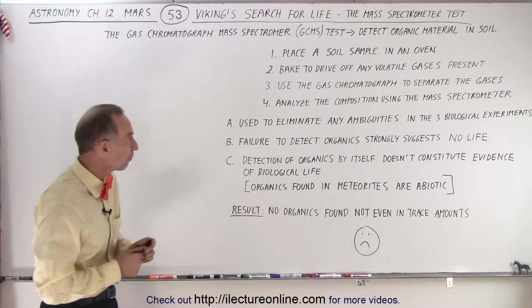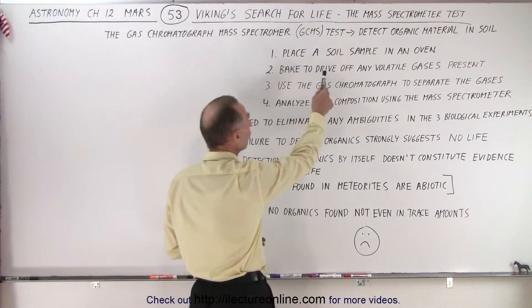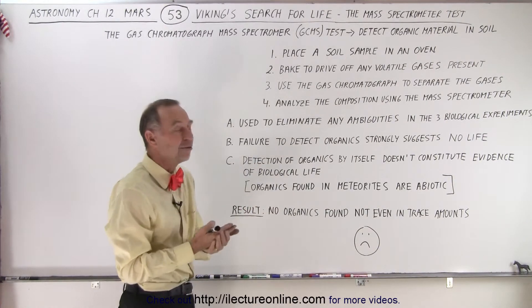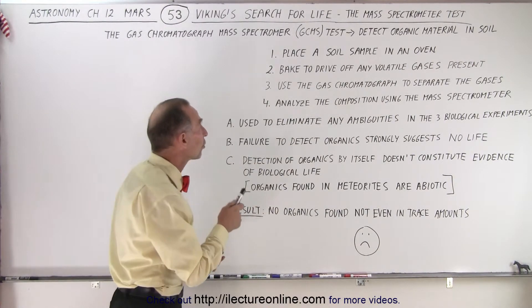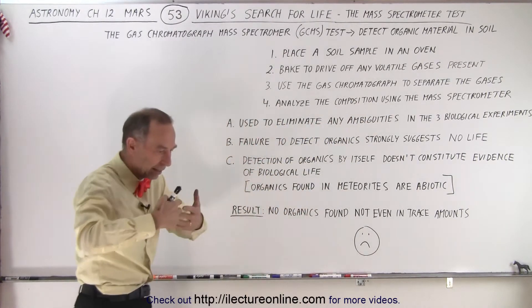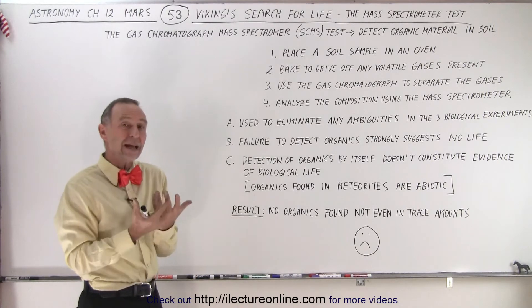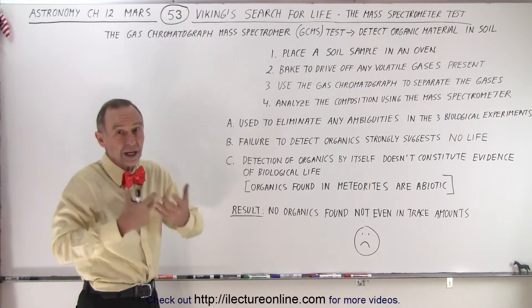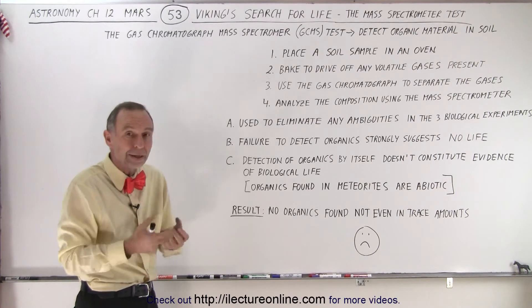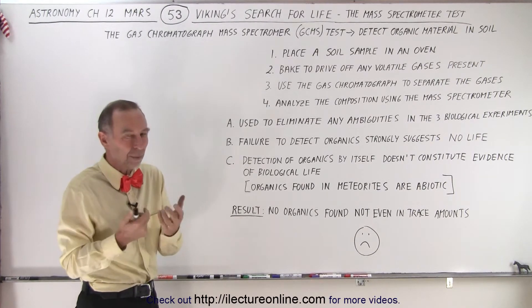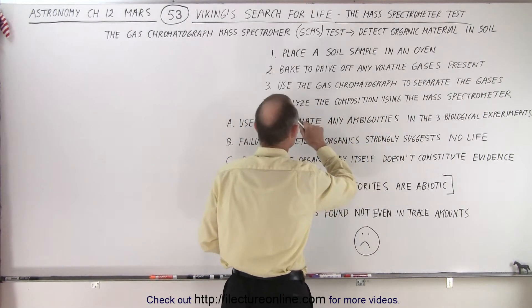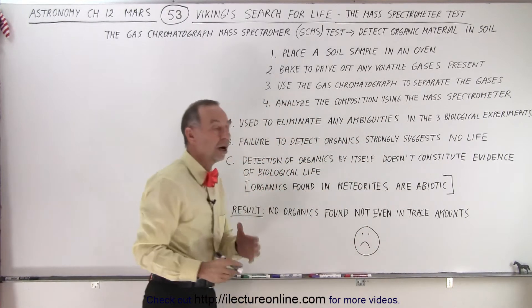How did it do that? First of all, they placed some soil in a small oven and baked it to drive off any volatile gases. Then they used a chromatograph to separate the gases — assuming that baking released gases that may have come from organic material, since organic material at high temperatures typically breaks apart and gases are released. Then they used the mass spectrometer to analyze the composition of those gases.